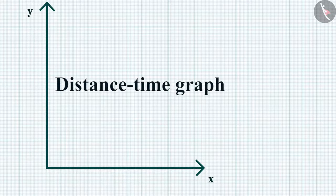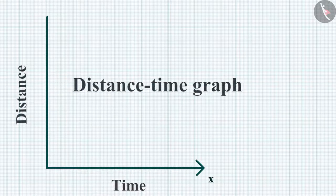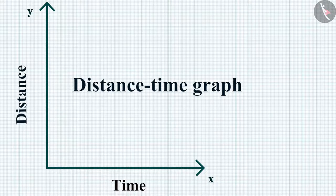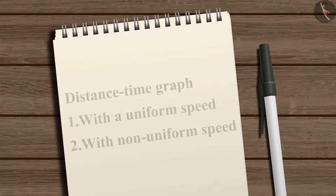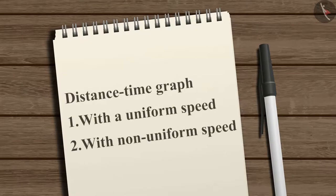Let's first discuss the distance-time graph. In this graph, we take time along the x-axis and distance along the y-axis. Distance-time graphs can be made by considering two situations: either the object moves with a uniform speed or with non-uniform speed.